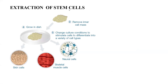If you have to extract stem cells from the embryo, you have to remove the inner cells and then grow them in a dish using a particular culture medium. For skin cells to differentiate into skin cells, there might be a different condition or culture medium. This is how they are extracted and grown in a lab.